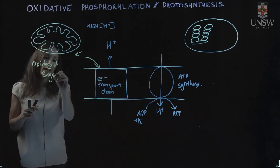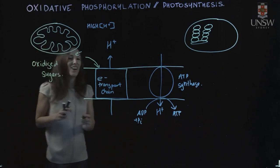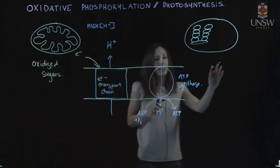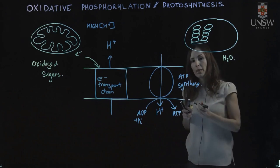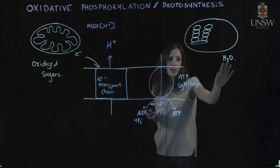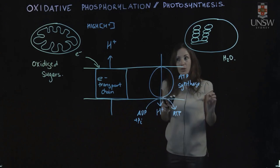And that is our source of electrons. And on this side, our source of electrons is coming from the splitting of water, and we're trying to generate, in this case, ATP in order to create sugars.